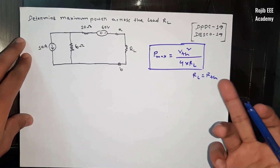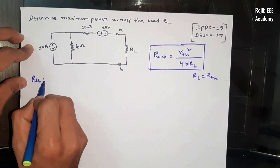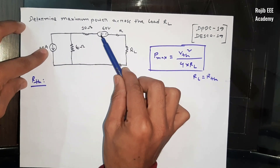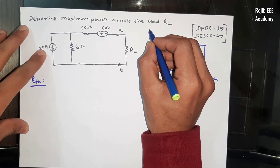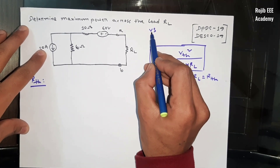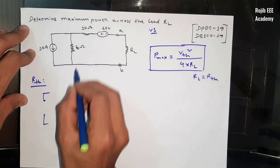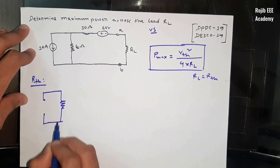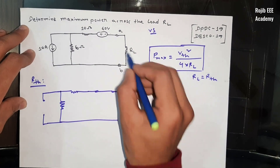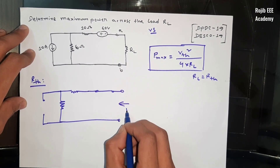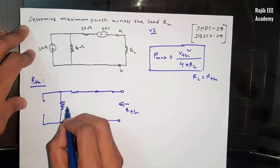For RTH calculation, we see there is an independent voltage source and we replace it with its internal resistance — that means the voltage source will be shorted. The current source will be open. So the current source is removed for RTH calculation. The values are 6Ω and 10Ω.